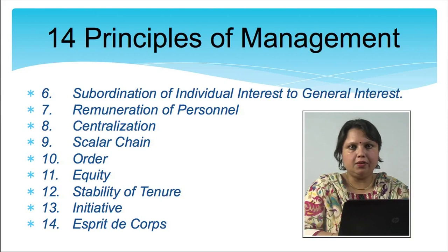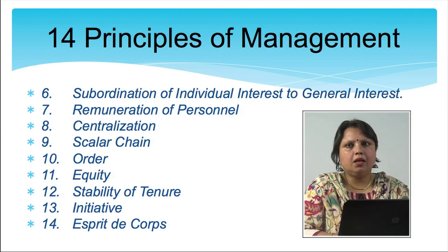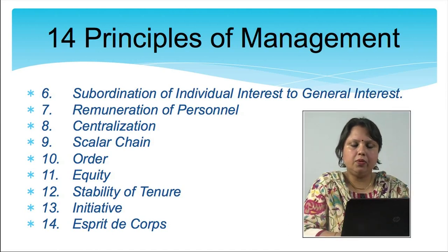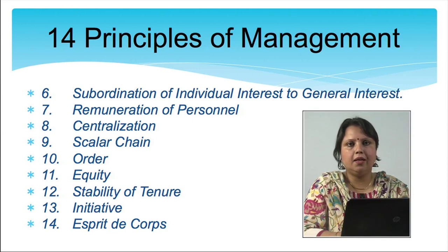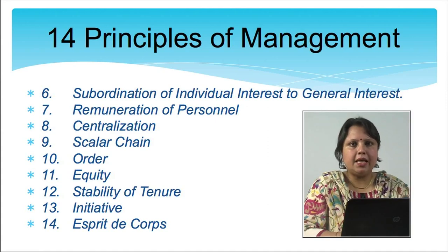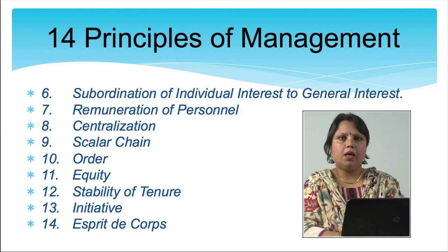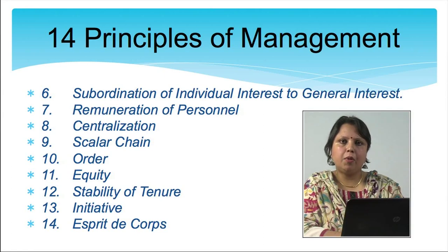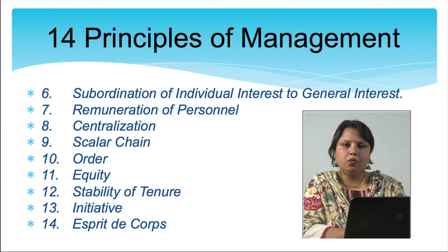The sixth principle is subordination of individual interest to general interest: there should be coordination between individual goals and the goals of the organization. Seventh is remuneration of personnel: workers will be motivated to work better only if they receive fair salary, which was also stated by Taylor. Eighth is centralization: depending on the type of organization, the amount of centralization and decentralization should be decided. Ninth is scalar chain: work should flow in a single direction, from top to bottom.